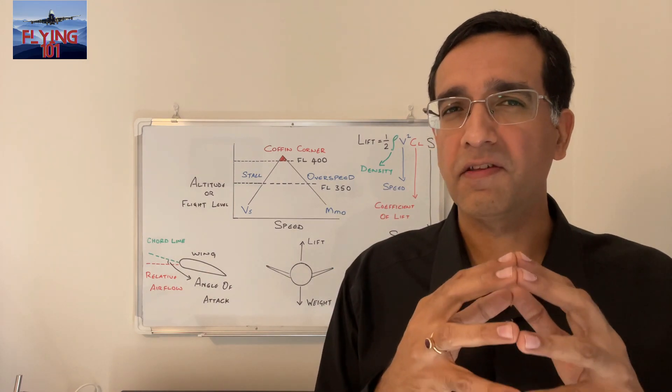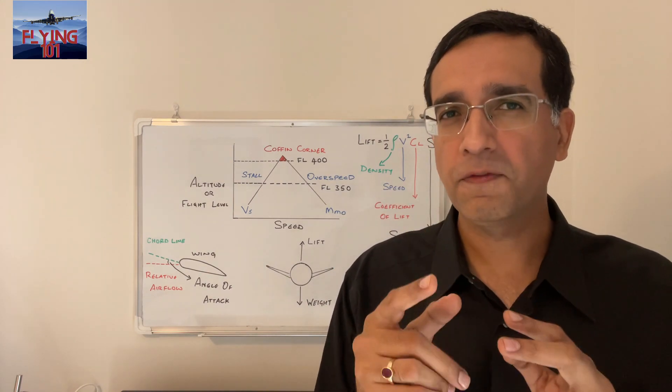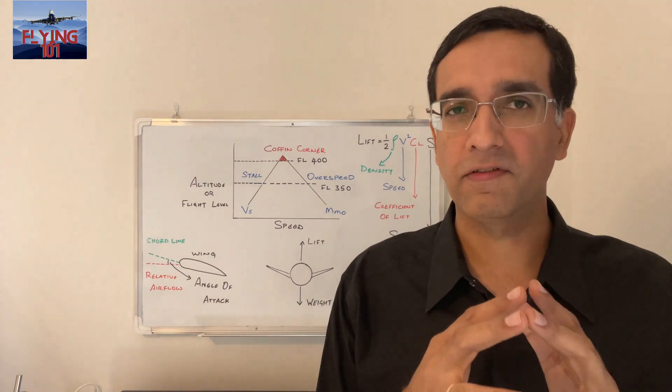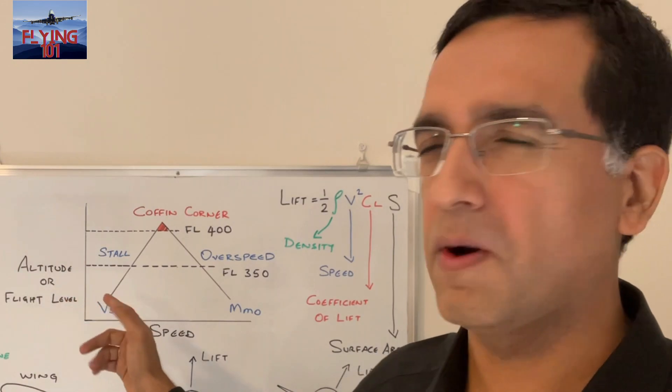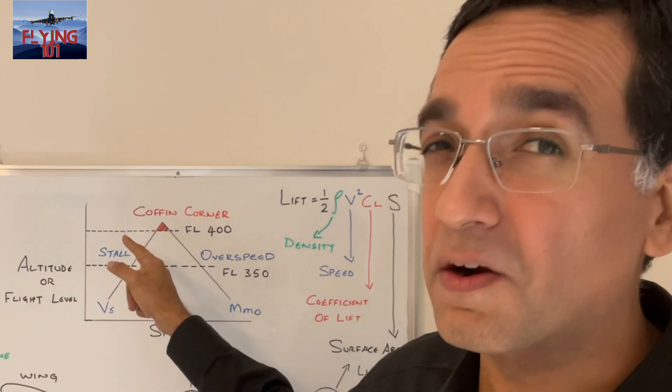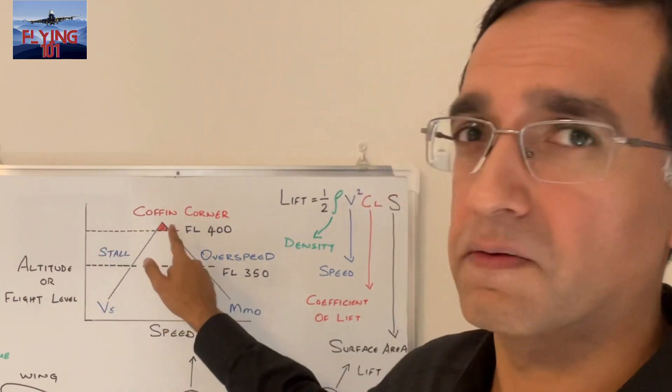And this altitude is a function of two things: the weight of the aircraft and its g-force loading. In this little illustration, we can see that the left side represents the stall speed of the aircraft that increases as the altitude increases.